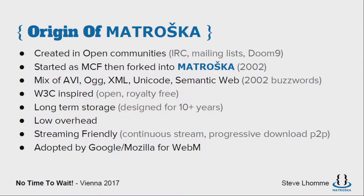Matroska was an open project — not just open source, but something that was created in the open, basically on IRC, mainly on Doom9, which is a forum where people discuss technical stuff. So basically what we did was start from MCF, which was the project I joined. And then from technical divergence, I created my own fork with stuff that I had worked on and developed that the original creator disagreed with. That's how Matroska was created.